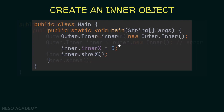To create a static inner object, we declare the type as Outer.Inner, name it 'inner', and instantiate it using the class name followed by new Inner(). We are not using an outer object — just the class name. After that, we can access the inner object normally.